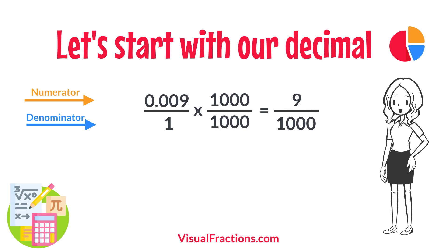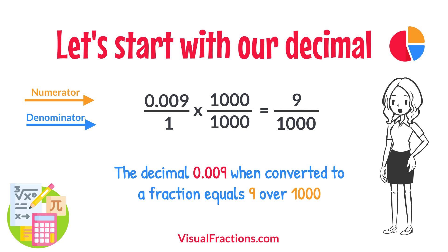This translates 0.009 to the fraction 9 over 1,000. And there you have it. The decimal 0.009 when converted to a fraction equals 9 over 1,000. This fraction is in its simplest form and cannot be further simplified.